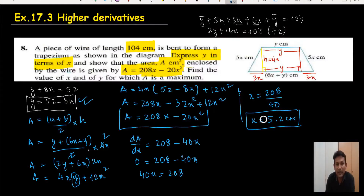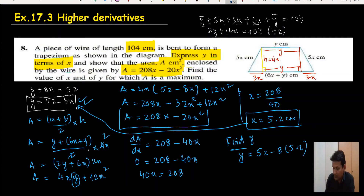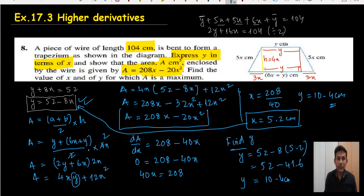To find y, substitute x equals 5.2 into y equals 52 minus 8 times 5.2. That gives 52 minus 41.6, which equals 10.4. So x is 5.2 cm and y is 10.4 cm when the area is maximum. By this way we have done question number 8.